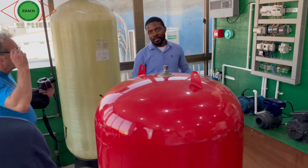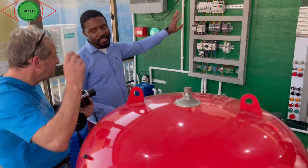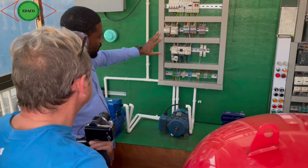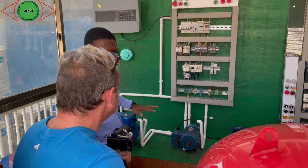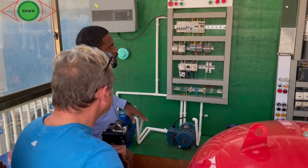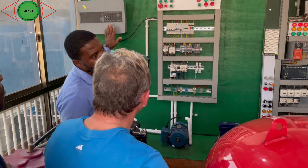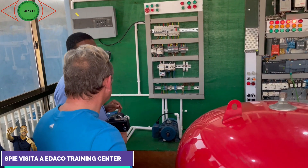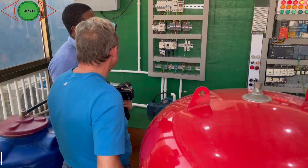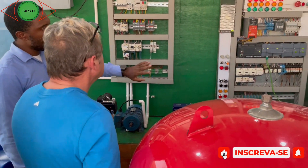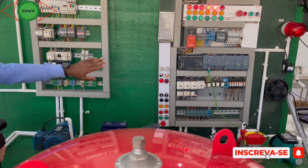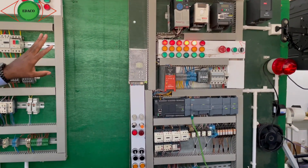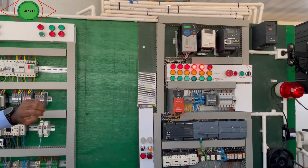In terms of electricity, here we have a control panel where we start our motor. Here we have a small fire and gas control system. And here we have another system with integration between two types of matrix PLCs.